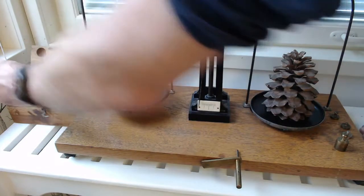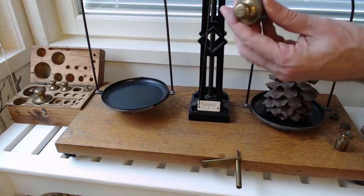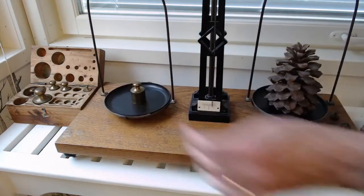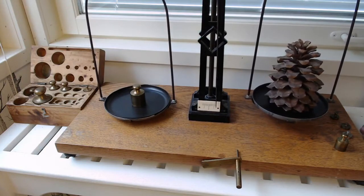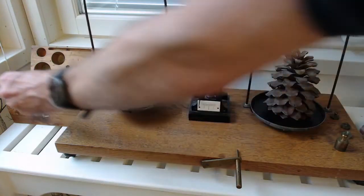So, if we take an object of 200 grams, you can see that the cone weighs less than 200 grams. So, we have to take this away and put it back here.